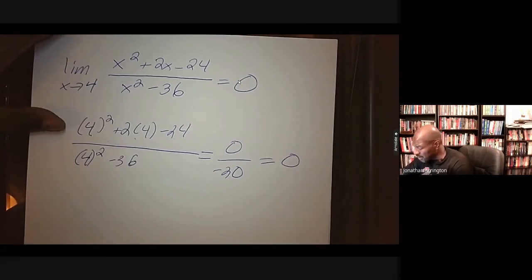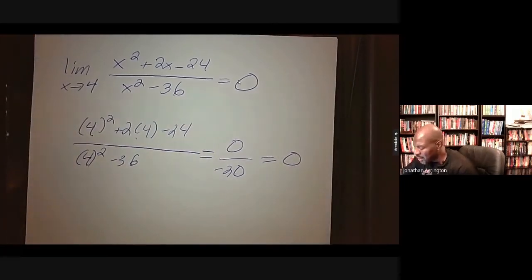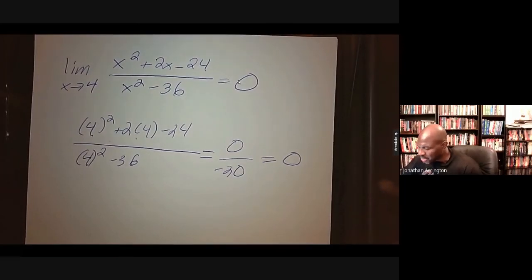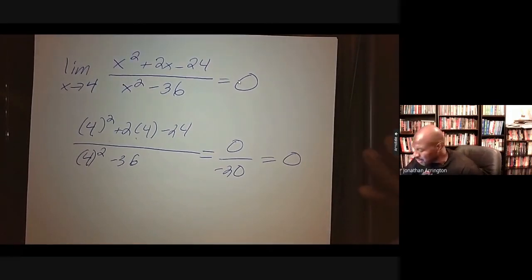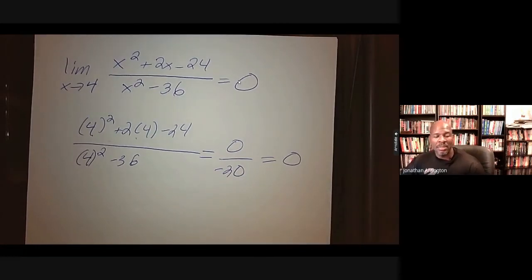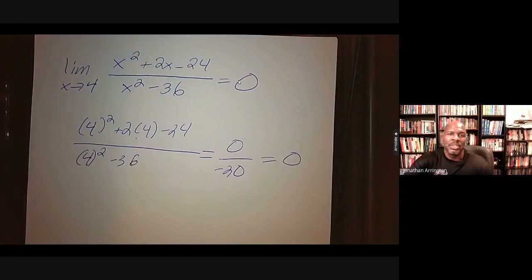That concludes our lesson on finding limits analytically. The key skill is to factor. Plug the number in for x first — if you get 0 over 0, factor and solve; if you get a non-zero number over 0, write DNE; and if you get a regular number, that number is the answer. We'll see you next time.